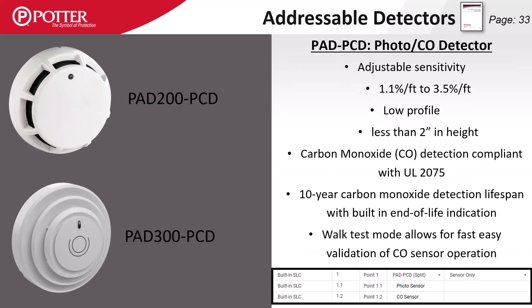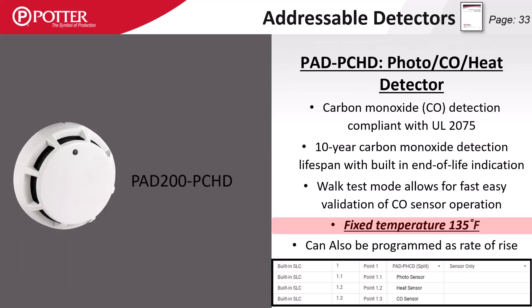The PCD is the combination photo and CO detector. Both series of detectors have a 10 year lifespan. The PCHD is all three detector types in a single detector head — a photoelectric smoke, a CO, and a heat detector — providing three separate mappable points.